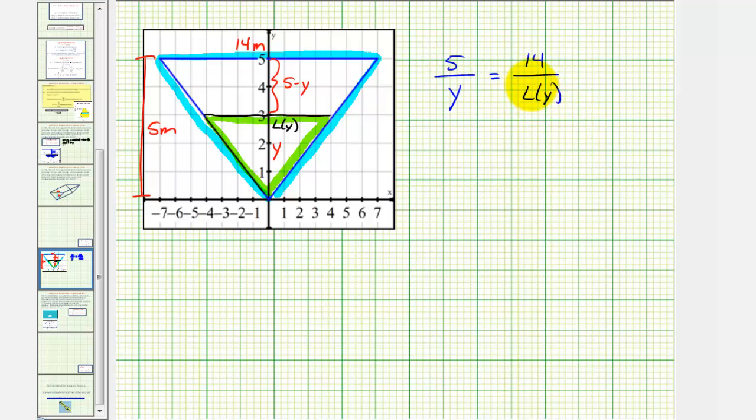Now we'll cross multiply and solve for L(y). So 5 times L(y) must equal y times 14. So 5L(y) = 14y. Divide both sides by five. And we have L(y) = (14/5)y.